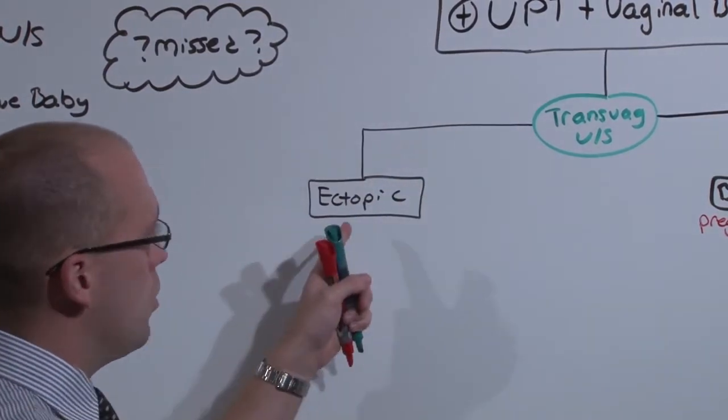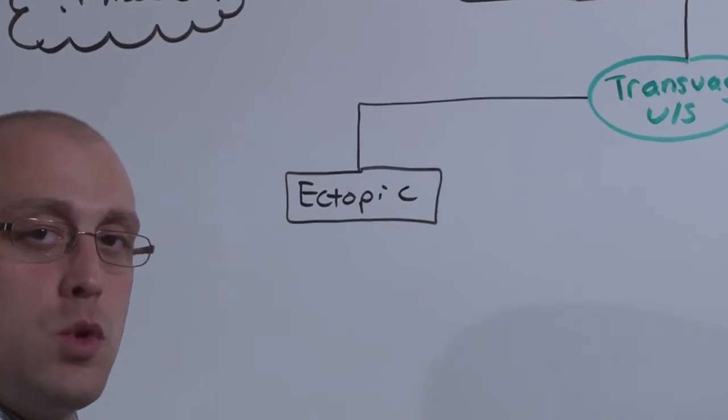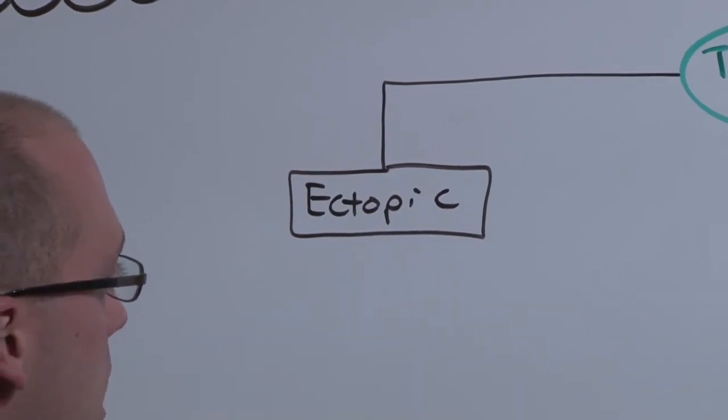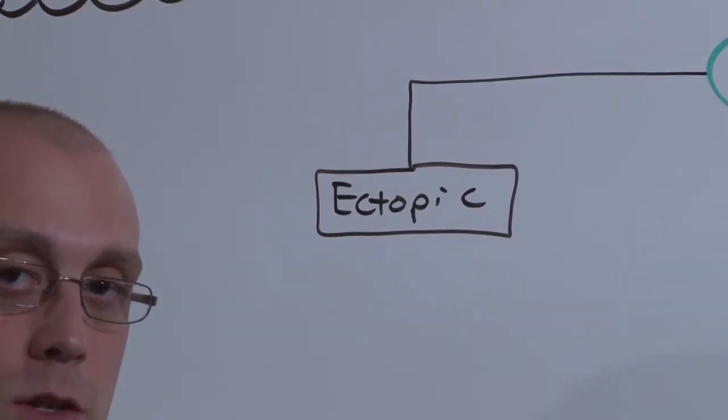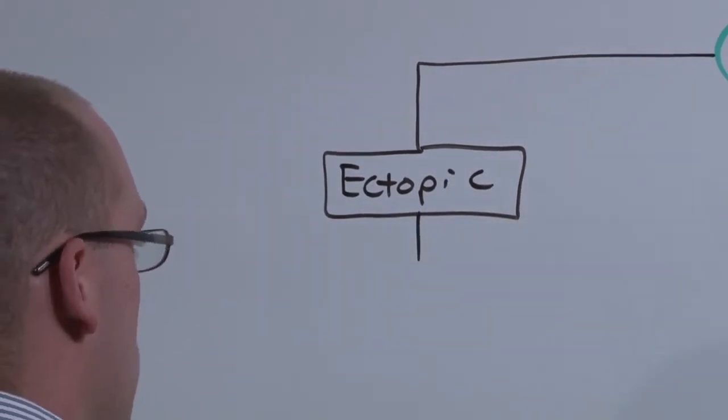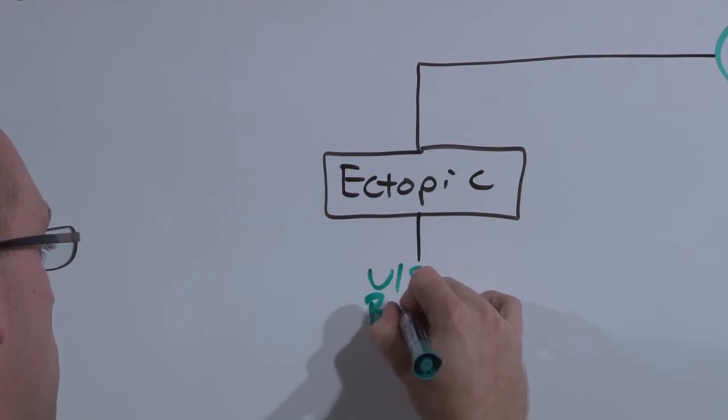Ectopic pregnancies are never normal, and if you allow them to grow, mom's going to die. The decision you have to make is, is there a rupture or not? Ectopic pregnancy is discussed in the Adnexal Masses lecture, but here is basically how you make your decision. You're going to use that ultrasound to see if there's any free fluid or rupture, and you're going to get a beta quant.